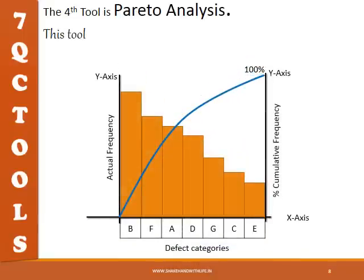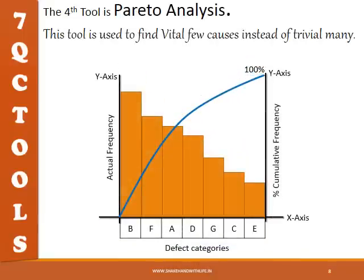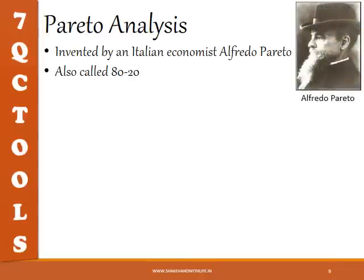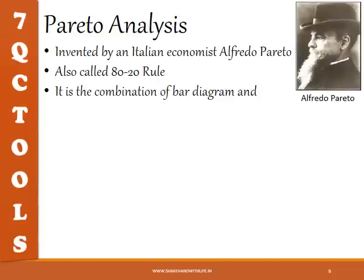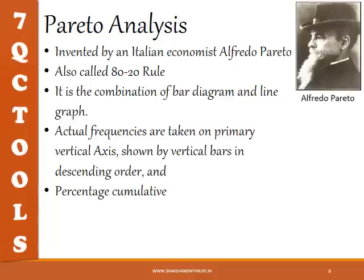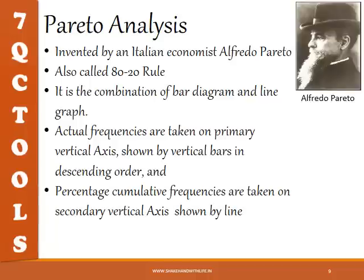The fourth tool is Pareto analysis. This tool is used to find the vital few causes instead of the trivial many. Pareto analysis was invented by Italian economist Alfredo Pareto and is also called the 80-20 rule. It is a combination of a bar diagram and a line graph. Actual frequencies are taken on the primary vertical axis shown by vertical bars in descending order, and percentage cumulative frequencies are taken on the secondary vertical axis shown by a line graph in ascending order.